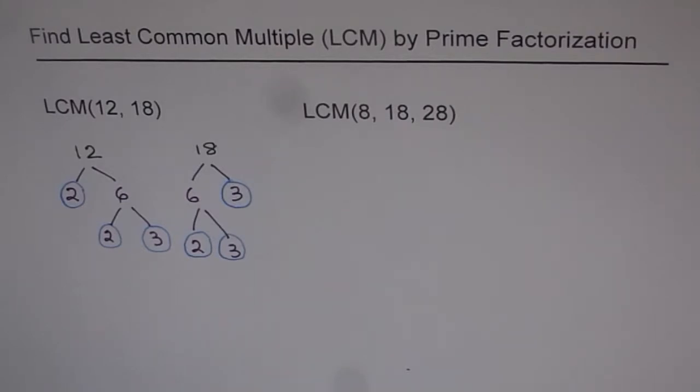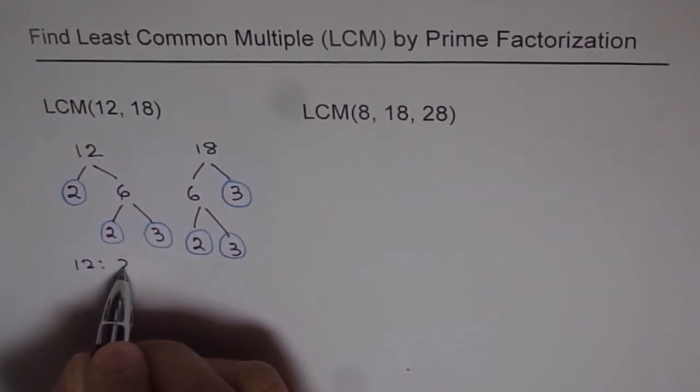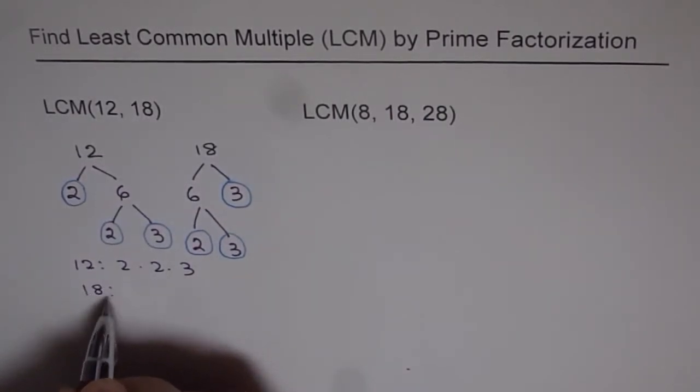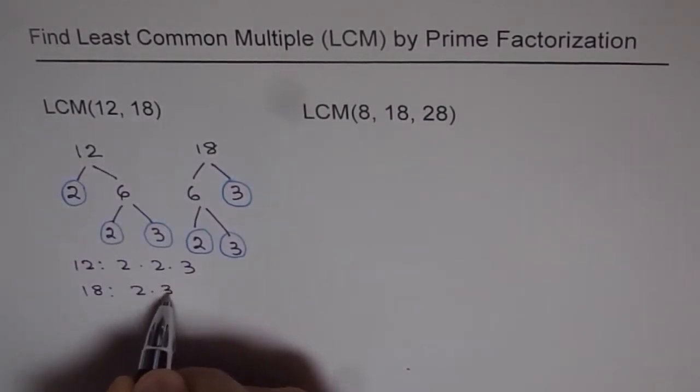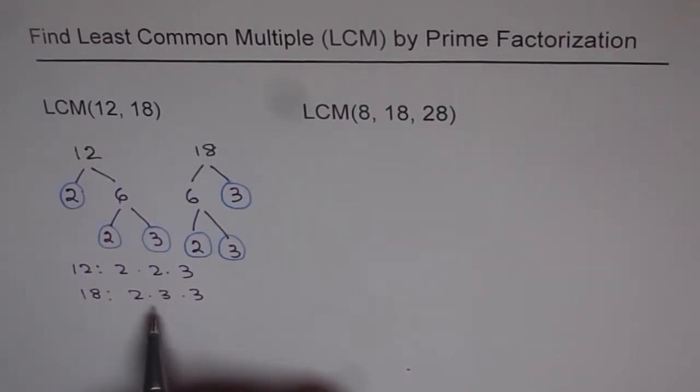Now, to find least common multiple, what we do is, we rewrite these factors. So, let's write down. For 12, the factors are 2, 2, and 3. And for 18, the factors are 2, 3, and 3. Once we list these factors, then we select the one which has most number of these factors.